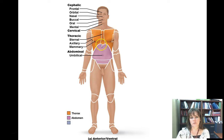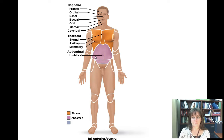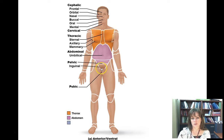The abdominal region is this purple area. A sub-region within it is the umbilical region — that's your belly button, where the umbilical cord was attached to your mother. Next is the pelvic region, the larger region here. Within that, we have the inguinal region, also called the groin, and then pubic, which is right in the genital area.